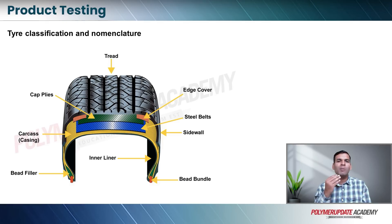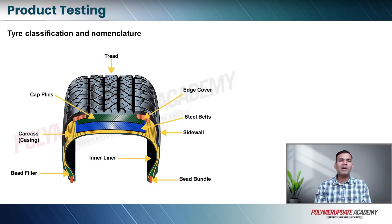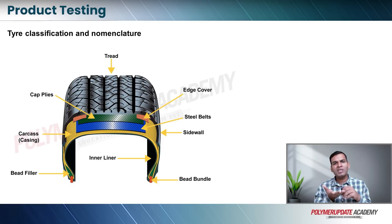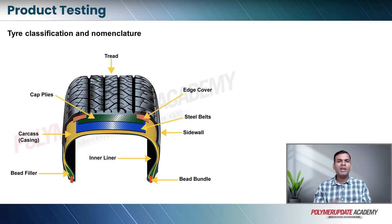Then you have different layers inside. There is the carcass or casing which shows a radial kind of pattern, and the steel belts which are shown at a particular angle showing a bias kind of pattern. These are to make sure that whatever weight the car has — from the engine and passengers — the air is going to support that weight and the structure will be integral enough not to flatten out. There are cap plies and an edge cover placed on top to make sure the steel belts and carcass are in place.